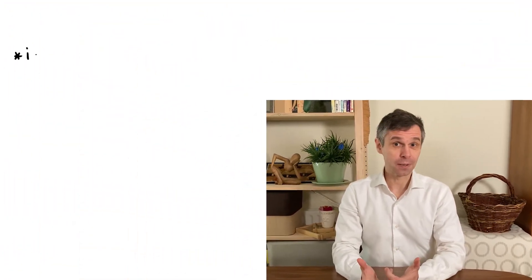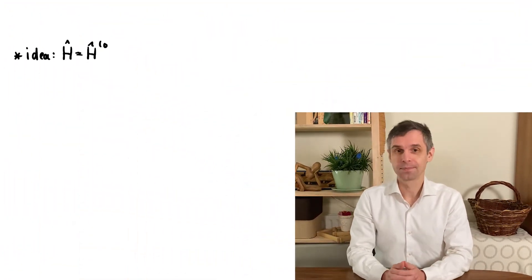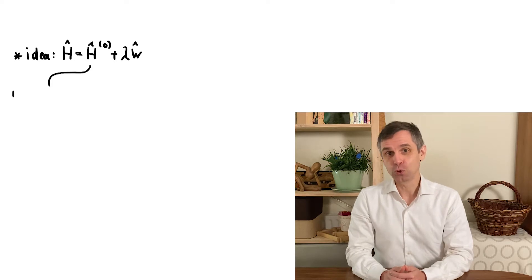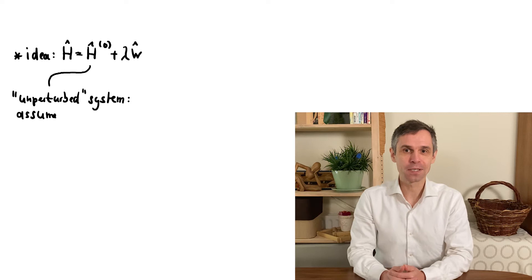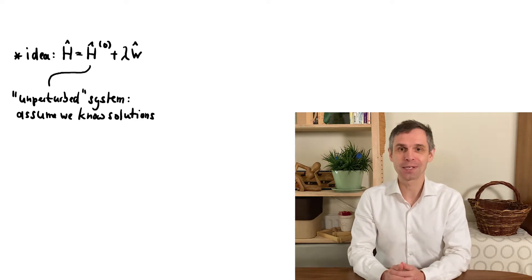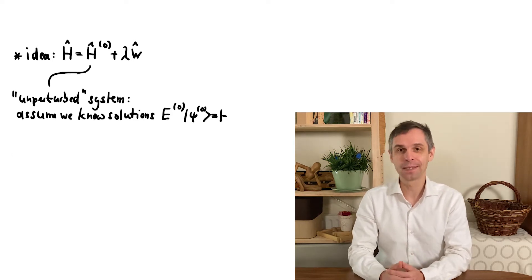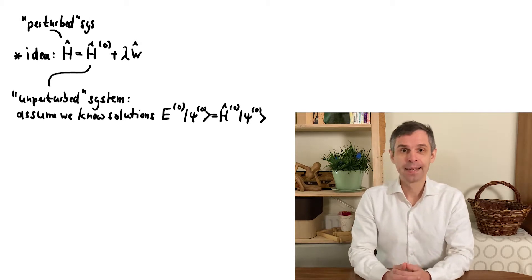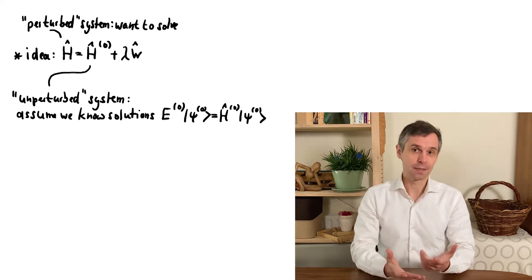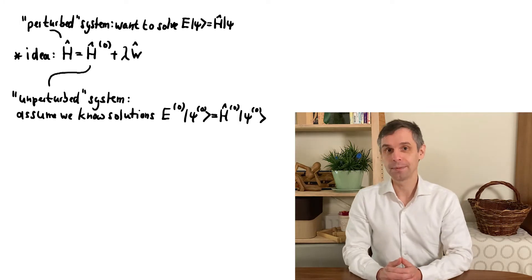Before we look at other examples, let's now have a look at the general derivation method of perturbation theory. What is probably most important here is to understand the general idea. As you recall, this relies on separating the known quantum system, the unperturbed system for which we know all the solutions, out of the complete perturbed system for which we want to find the solutions at least approximately. The remaining term defines the perturbation of strength lambda.